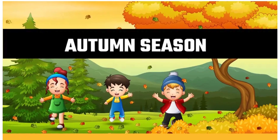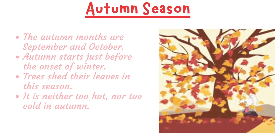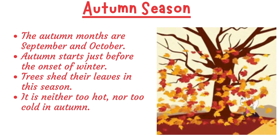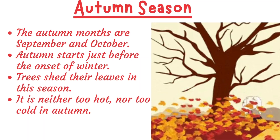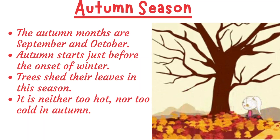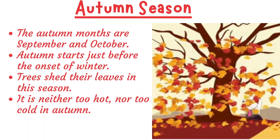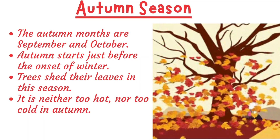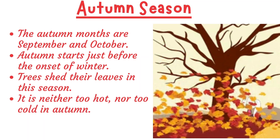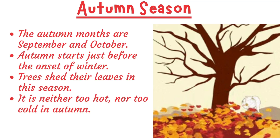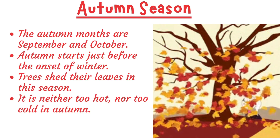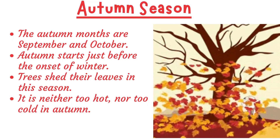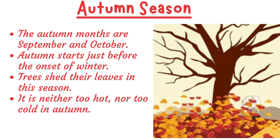Autumn Season: The autumn months are September and October. Autumn starts just before the onset of winter. Trees shed their leaves in this season. It is neither too hot nor too cold in autumn.